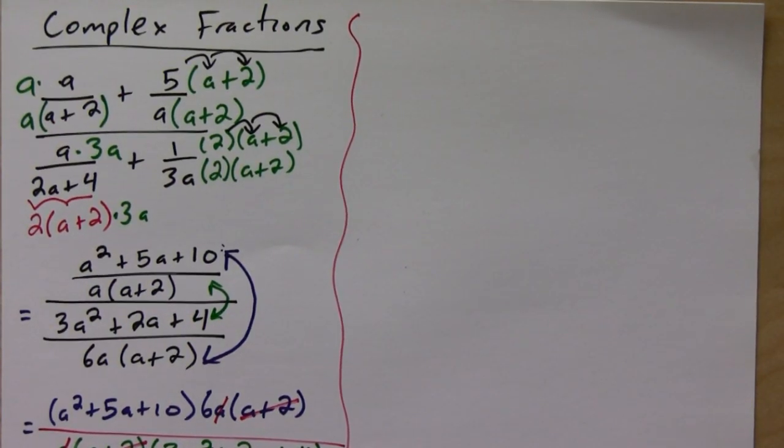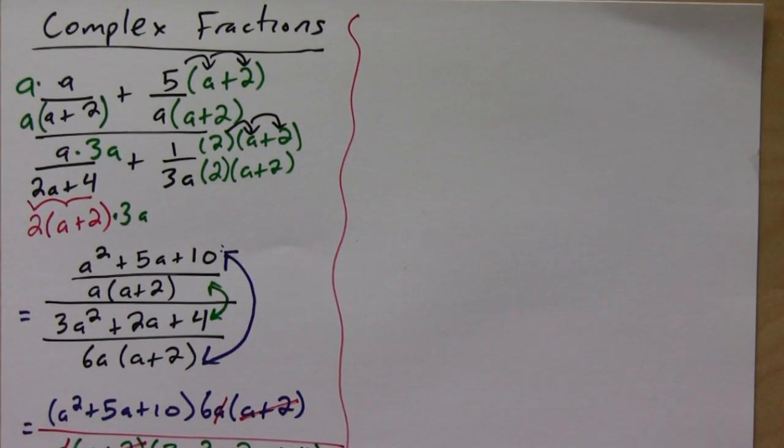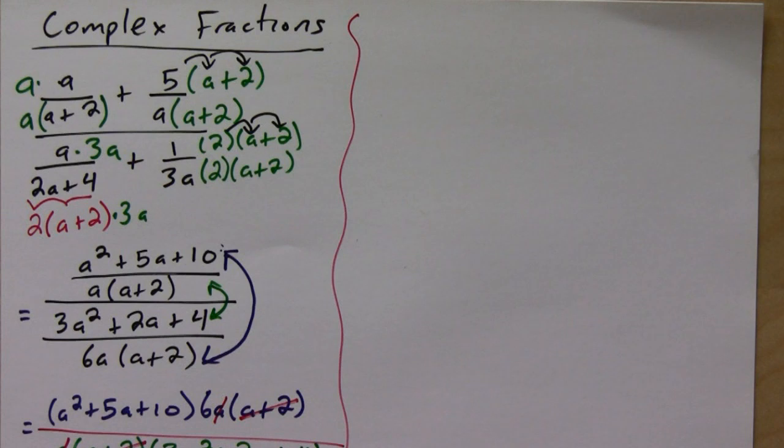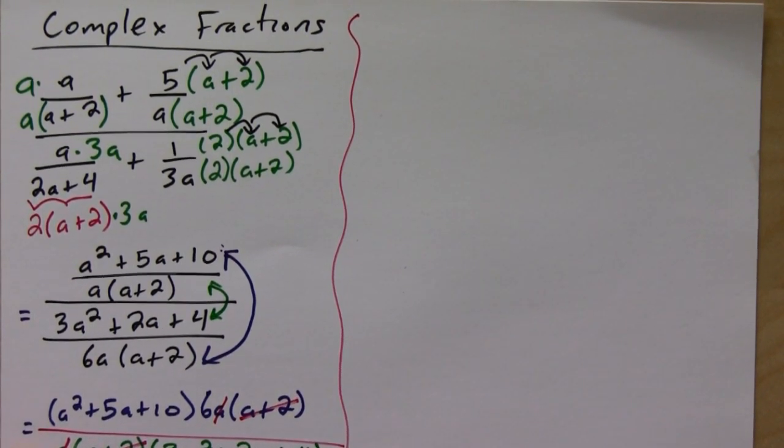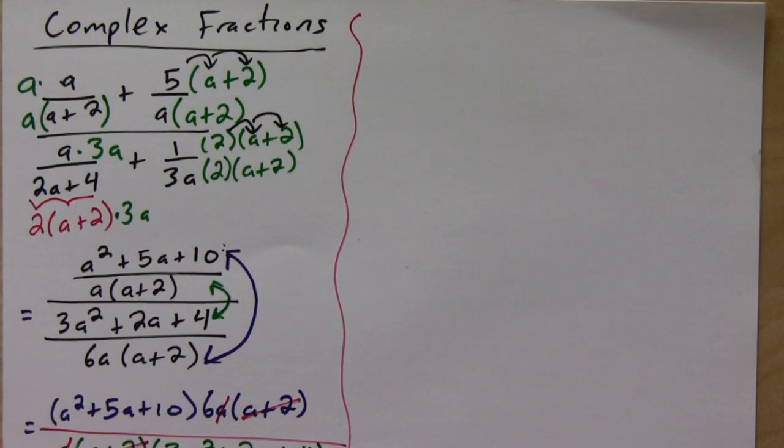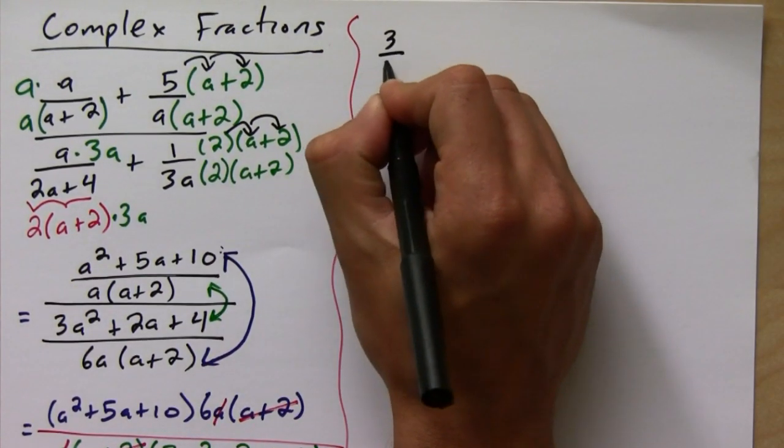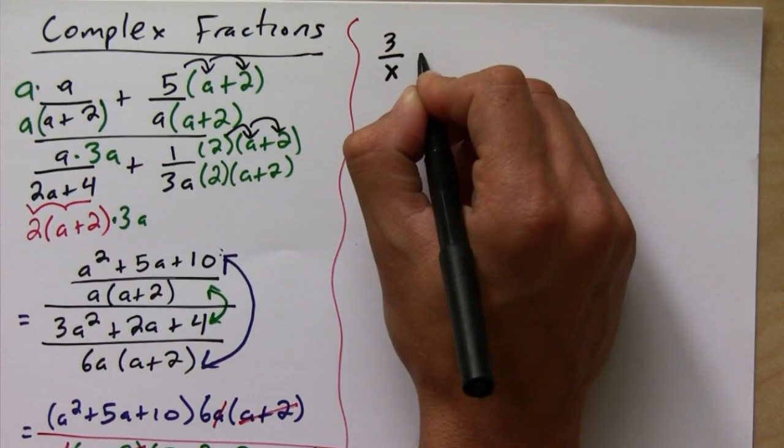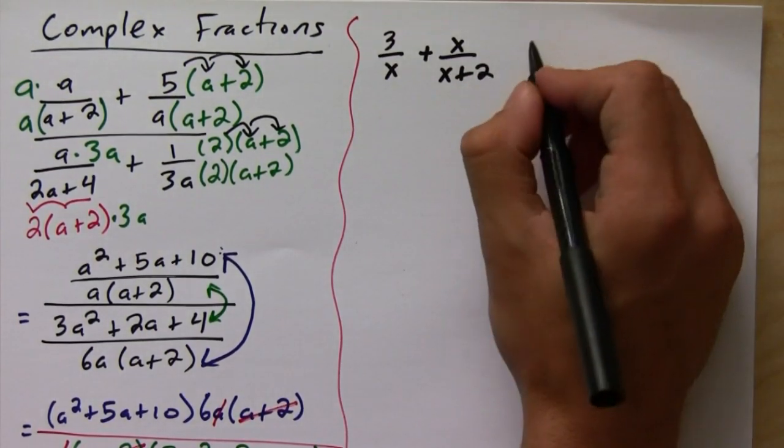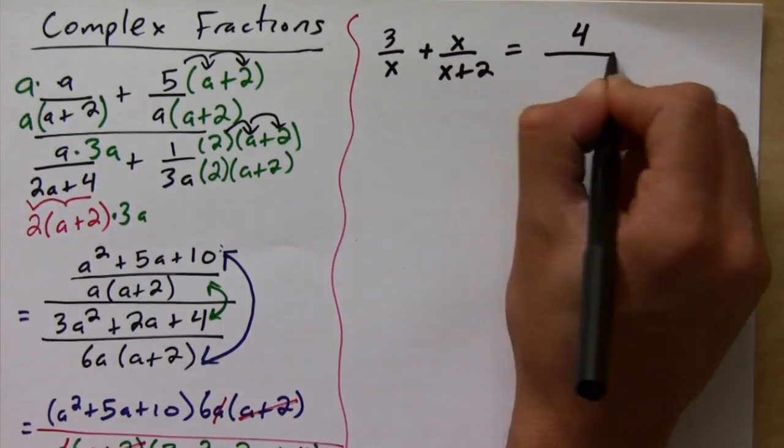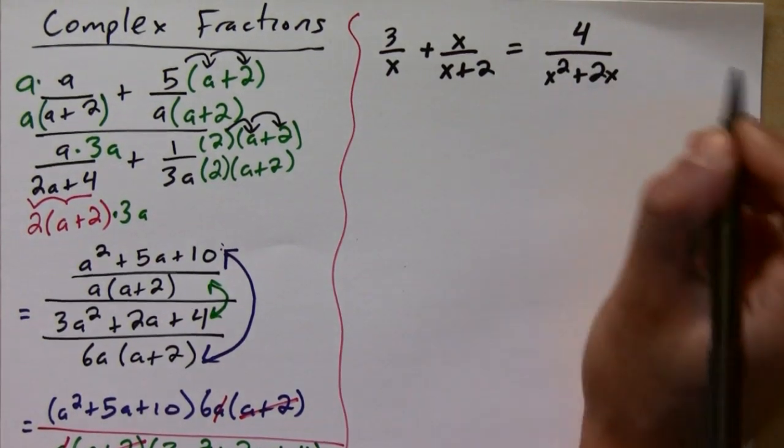Okay, so now let's do an example of solving an equation. So let's say we want to solve 3 over x plus x over (x plus 2) equals 4 over (x squared plus 2x).